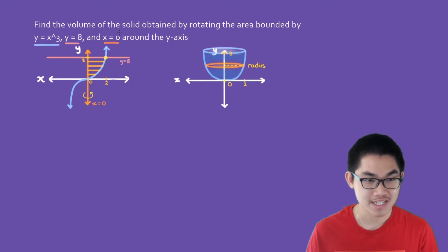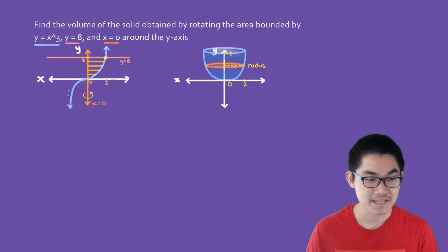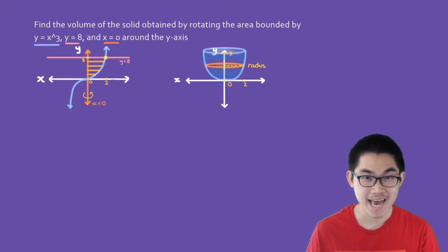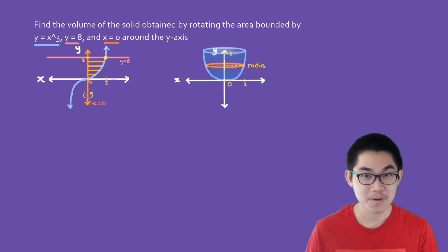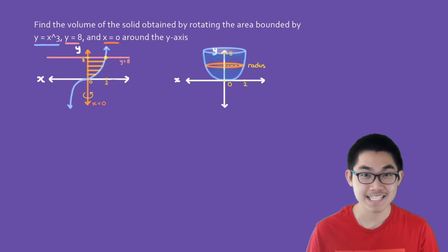Find the volume of the solid obtained by rotating the area bounded by y equals x to the power of 3 — that's the blue function right here — and y equals 8, which is the pink function, and x equals 0. We rotate the area around the y-axis. If we take the area between these curves and rotate it, we get a three-dimensional object like this, and this is the solid we want to find the volume of.